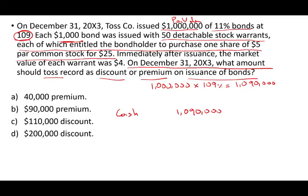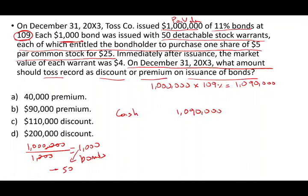Each warrant entitled the bondholder to purchase one share of $5 par value common stock for $25. We need to know how many bonds we have. Bonds come in $1,000 denomination, so with $1,000,000 worth of bonds divided by $1,000, we issued 1,000 bonds. Each $1,000 bond was issued with 50 detachable stock warrants. So each bond gives you 50 warrants, entitling the bondholder to purchase one share with a par value of $5 for $25.